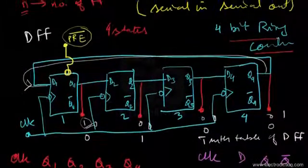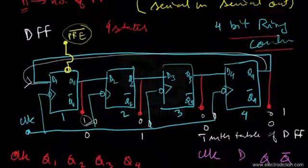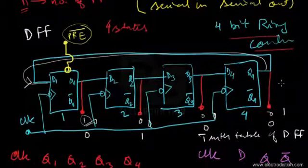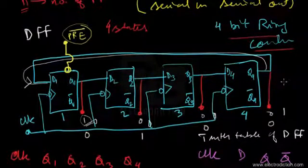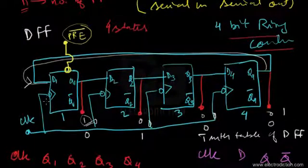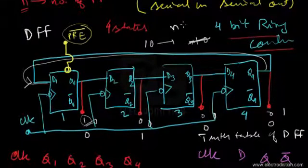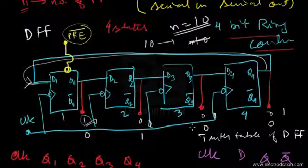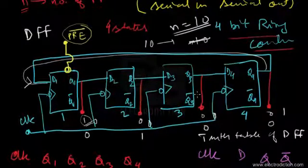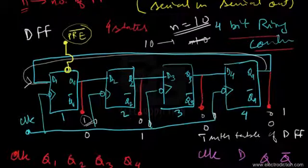The ring counter circuit can be made to pass through more than four stages by increasing the number of flip-flops. Depending on how many stages you want, you add that many flip-flops. For example, to pass through 10 stages, you would set n equal to 10, meaning you need 10 flip-flops to construct a ring counter capable of traversing 10 counting stages.